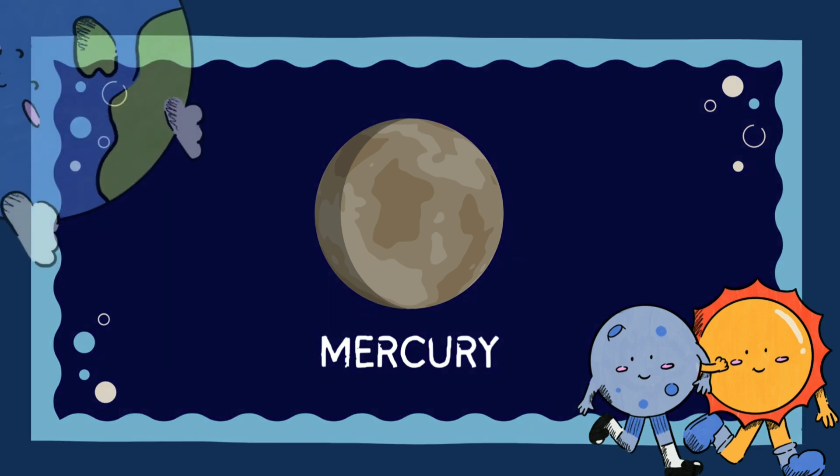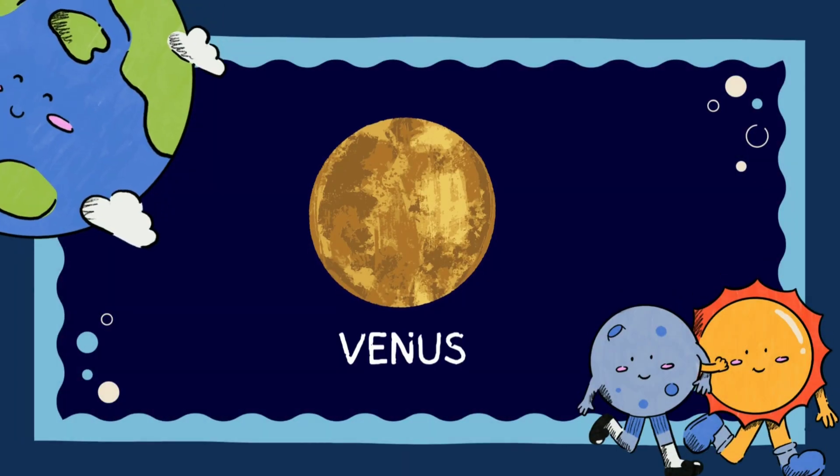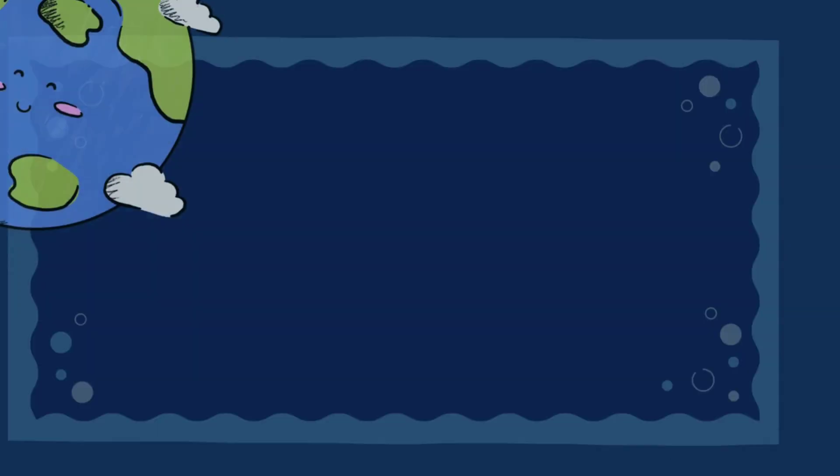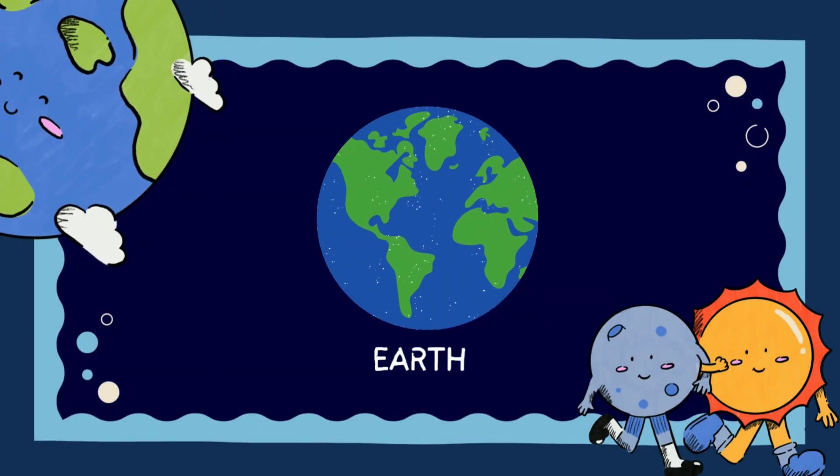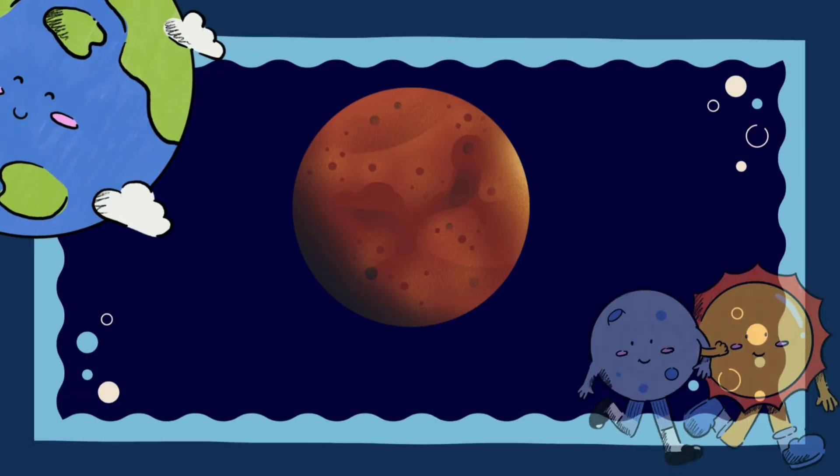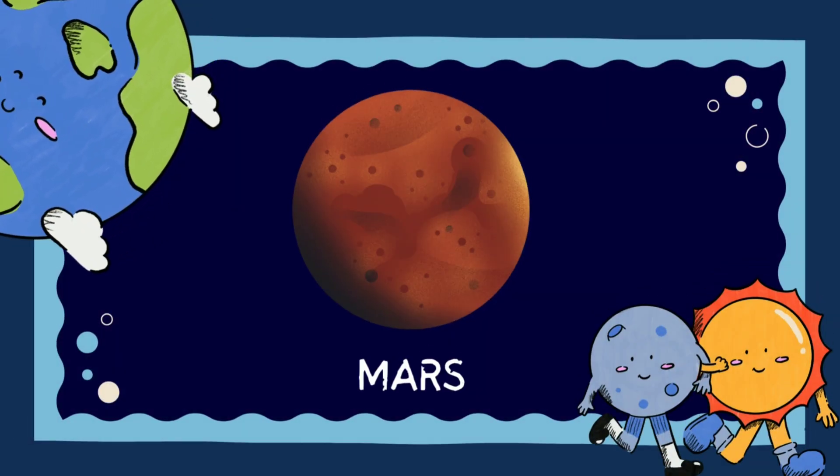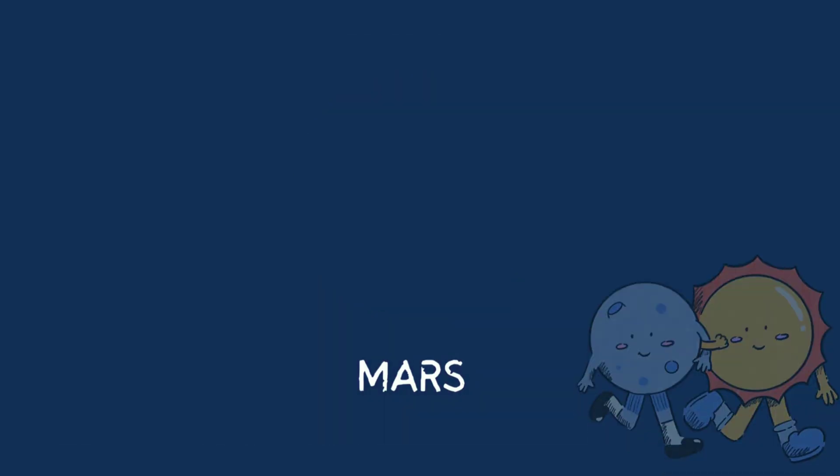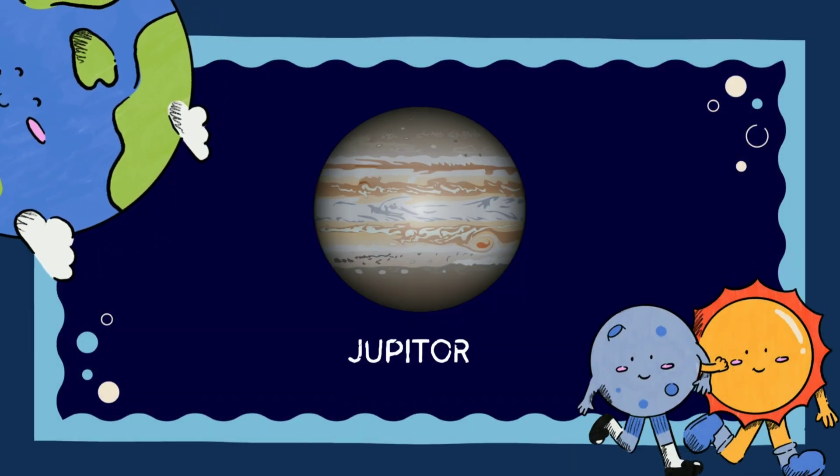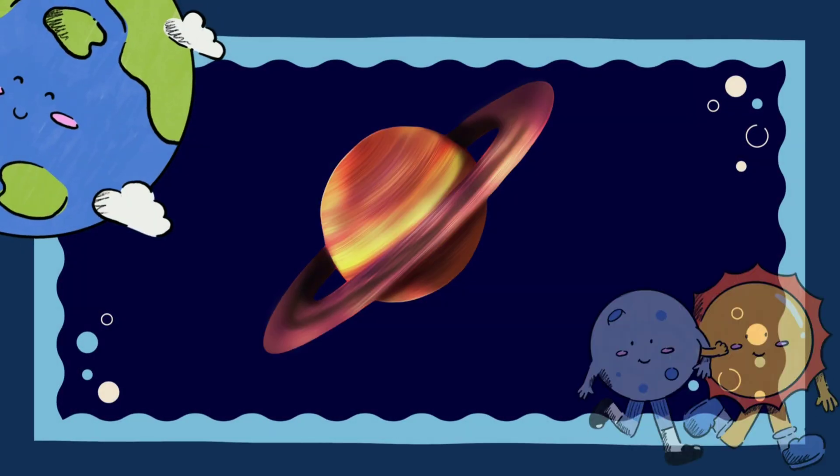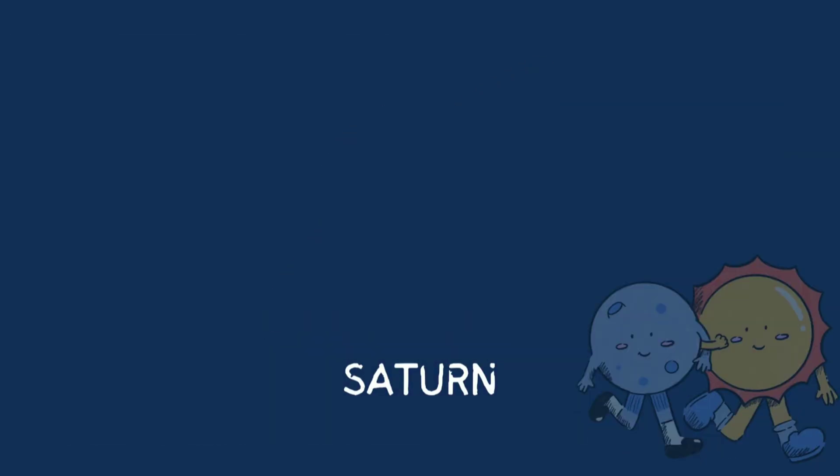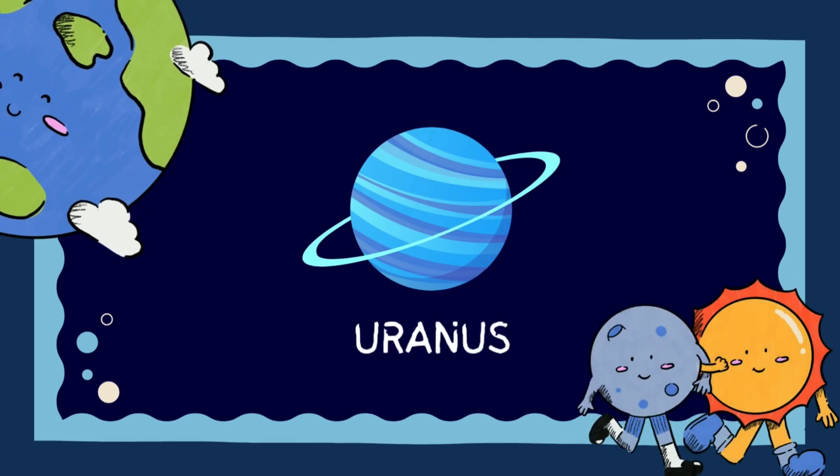The second one is Mercury. The next is Venus, then Earth, Mars, Jupiter, Saturn, and Uranus.